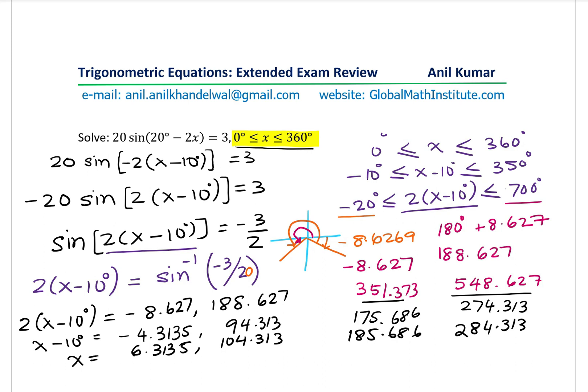Now, at times, you may have to round to hundredths. So let me rewrite our answers, rounded to hundredths as x equals 6.31 degrees, 104.31 degrees, 185.69 degrees, and 284.31 degrees.